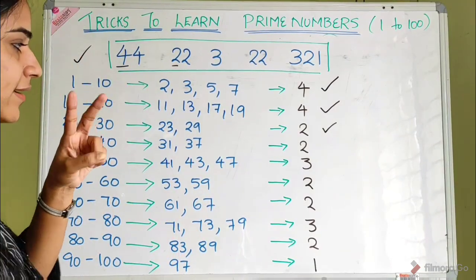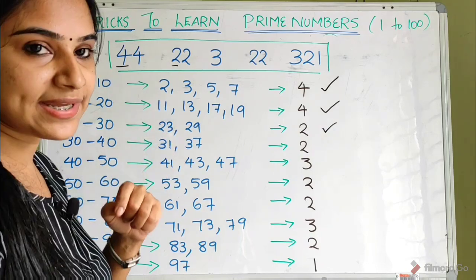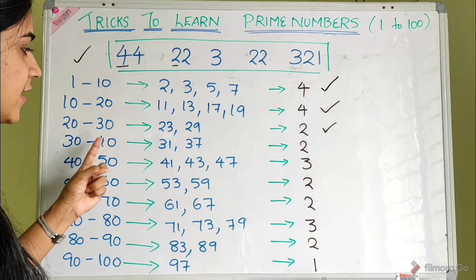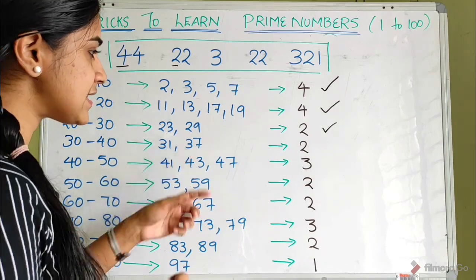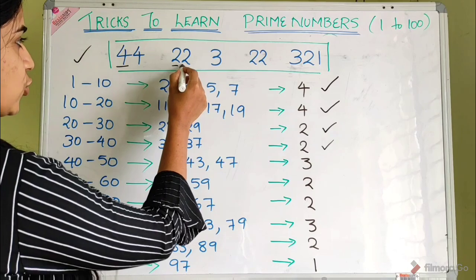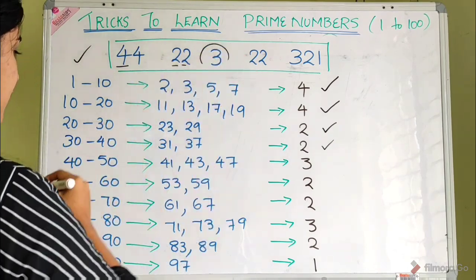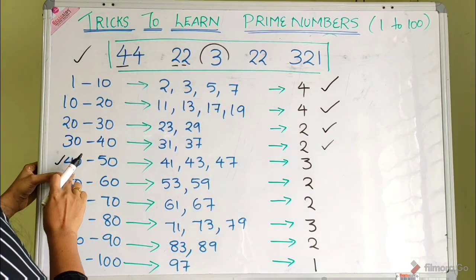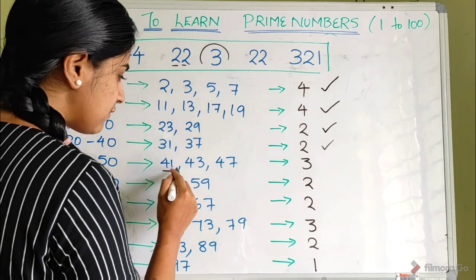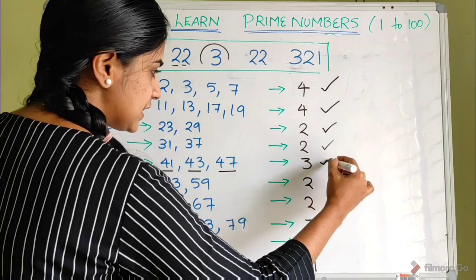Between 20 and 30, there are 2 prime numbers: 23 and 29. Between 30 and 40, there are 2 prime numbers: 31 and 37. Between 40 and 50, there are 3 prime numbers: 41, 43, and 47.